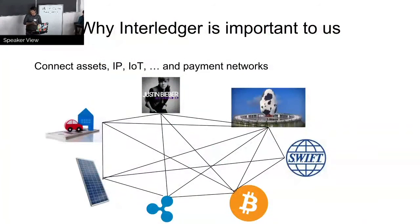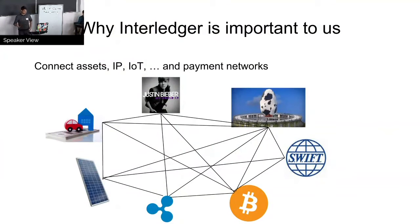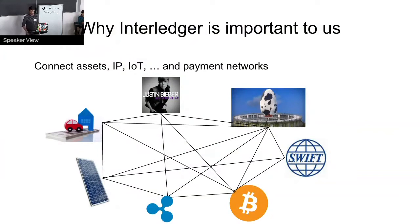Basically, what we see — how the Interledger protocol is important to us — is mainly because people not only want to trade money, but they want to trade assets. Maybe Internet of Things kind of types where you collect energy and want to sell some on the web. Maybe you're an artist, you want to get royalties. All these things can nicely be combined through this Interledger protocol.